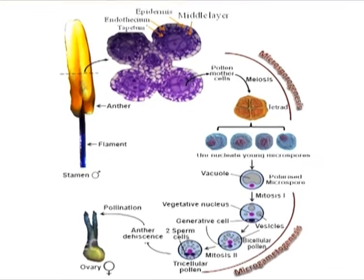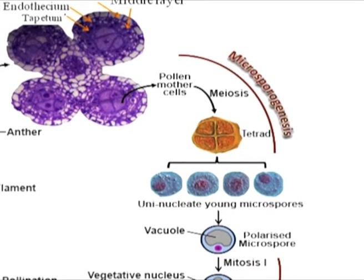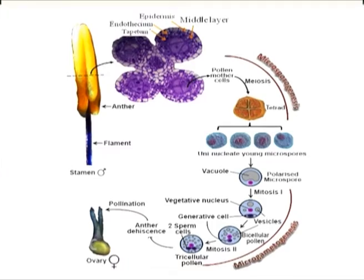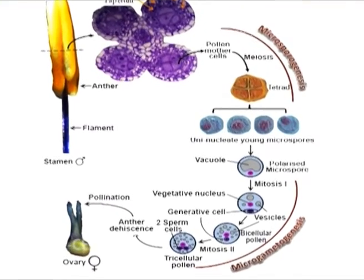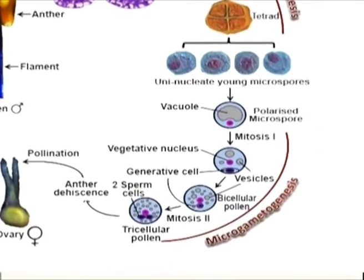The life of pollen or microspore undergoes three distinct phases. The first is its development inside the anther, the male sporophytic tissue, through microsporogenesis. The second phase is when it travels to a compatible stigma with the help of a vector, the process called pollination. The third and final stage is when it rapidly divides to form male gametes through microgametogenesis, and liberates its male cells inside the female sporophytic tissue to fuse with the egg, the process called fertilization.